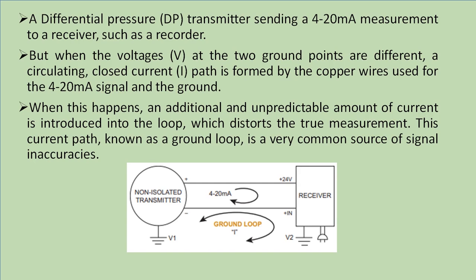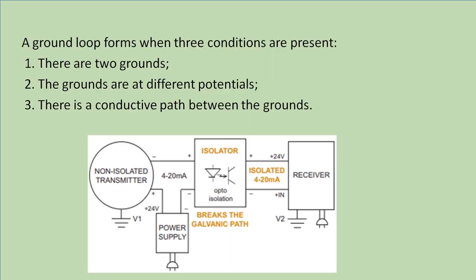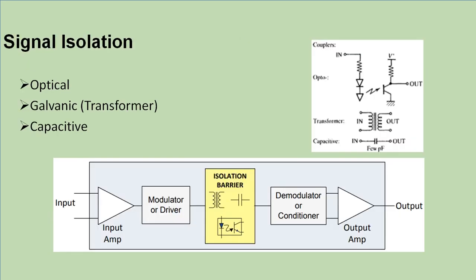This current path is known as the ground loop, and it is a very common source of signal inaccuracy. A ground loop forms when three conditions are present: there are two different grounds for the transmitter and receiver, the grounds are at different potentials, and there is a conductive path between the two points. The first two points cannot be eliminated, and the only way to eliminate this ground loop is isolation between the transmitter and the receiver.